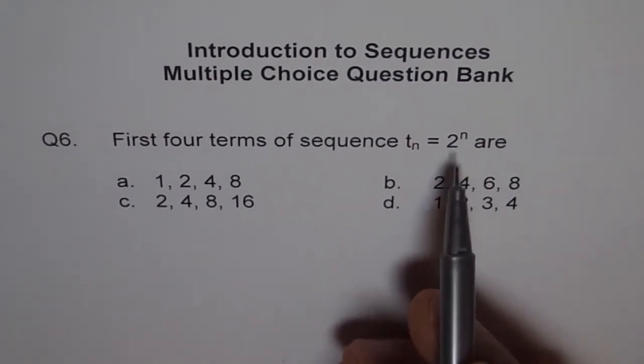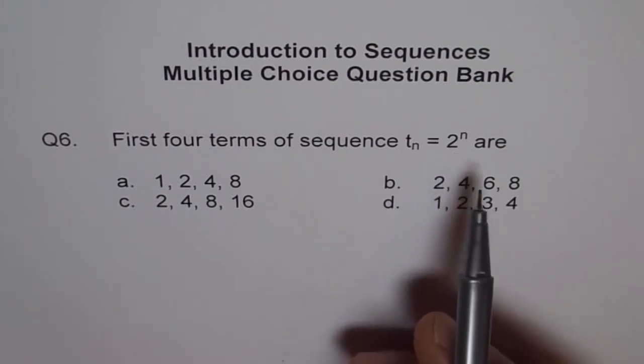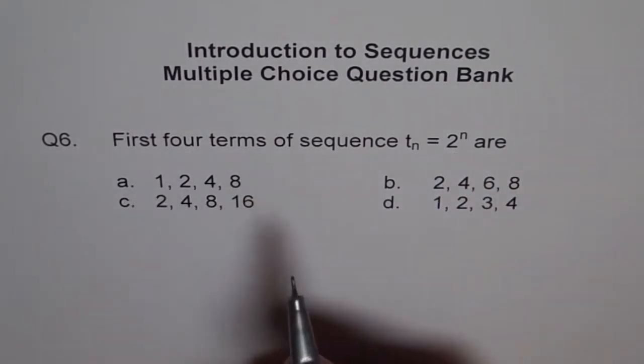N is set of natural numbers and N is equal to 1, 2, 3, 4 for first four terms.